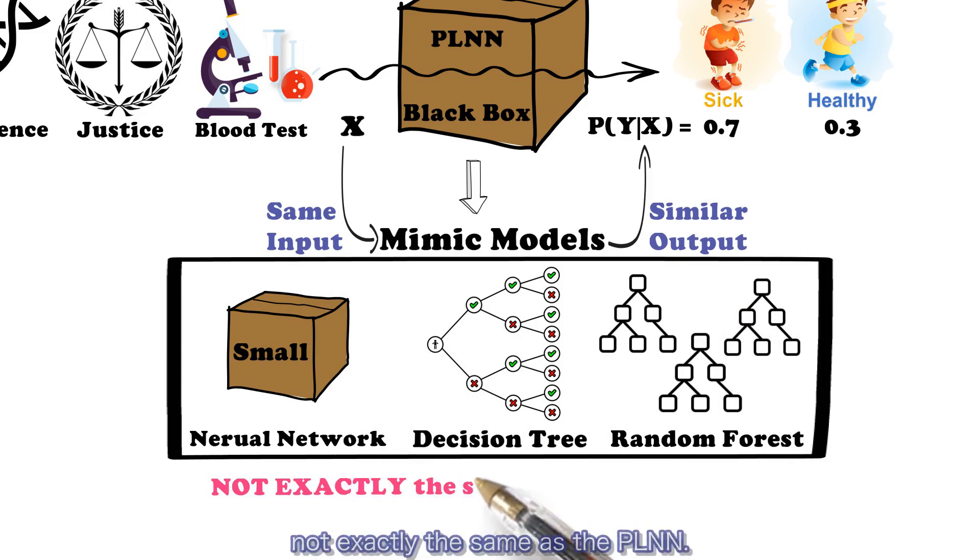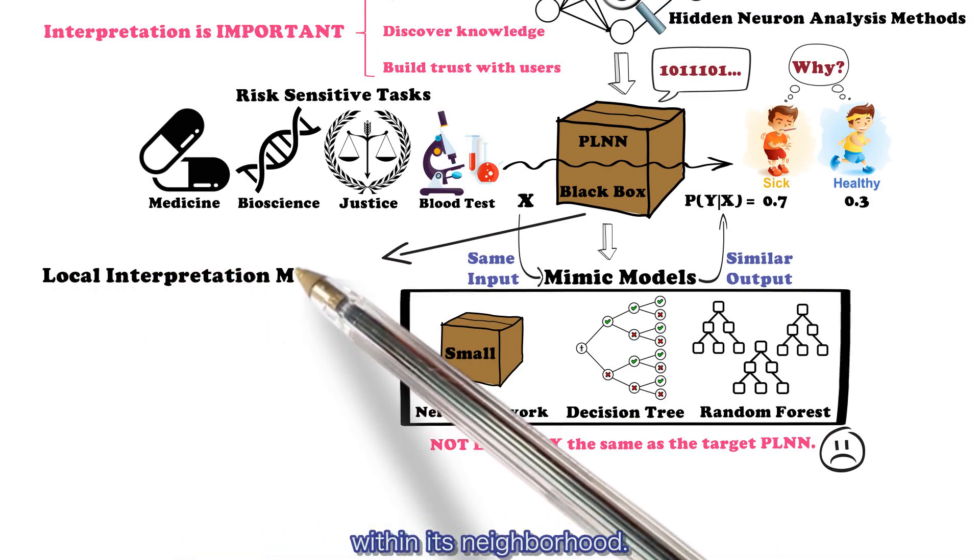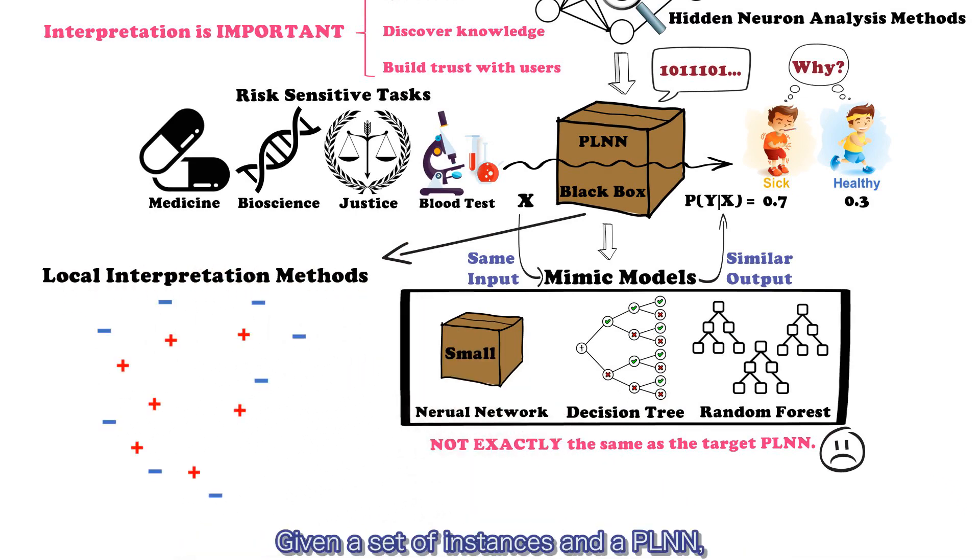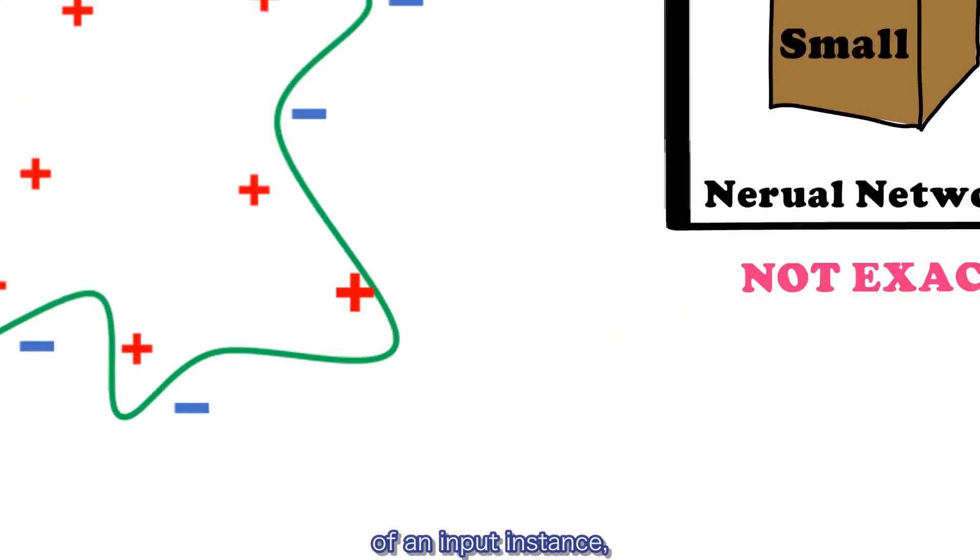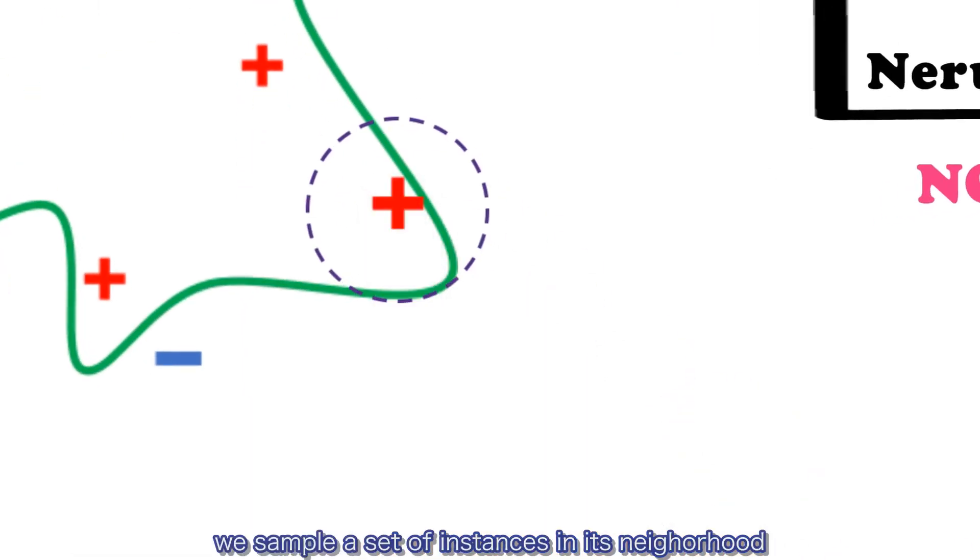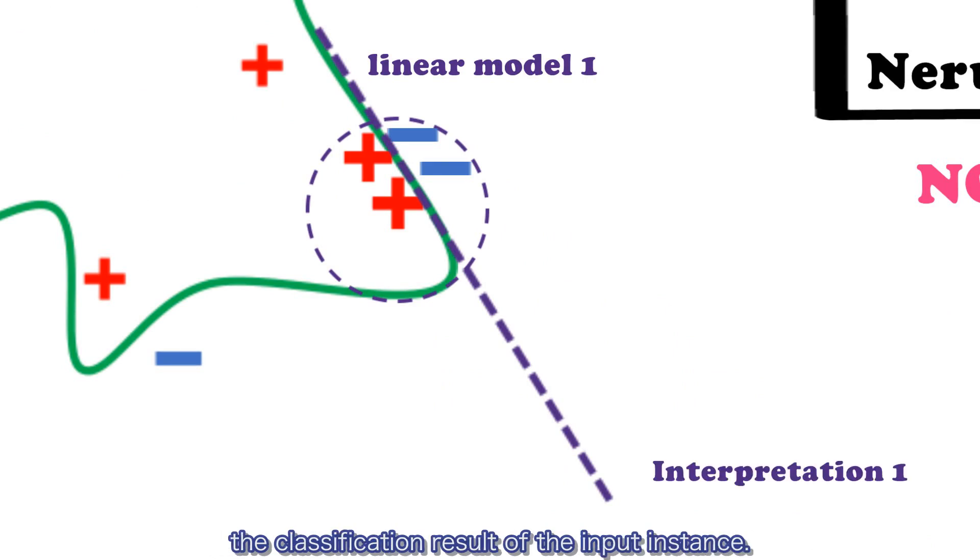The local interpretation methods interpret the classification result of an input instance within its neighborhood. Given a set of instances and a PLNN, to interpret the classification result of an input instance, we sample a set of instances within its neighborhood and use these samples to train a linear model. The decision features of this linear model explain the classification result of the input instance.